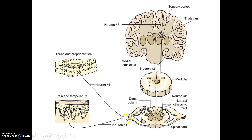In each of these we have the first order neuron which is going to take that sensory information and the pain, the second order neuron which is going to transfer that pain signal to the brain, and the third order neuron which is going to translate it. The brain is then going to release endorphins and different chemicals to decrease that pain signal.